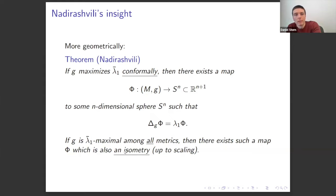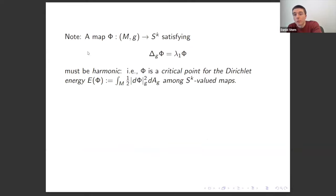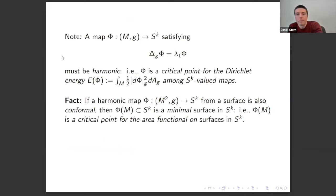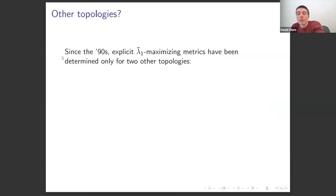To solve Berger's conjecture, one argues that a maximizing metric exists and relies on the Montiel-Ros classification of minimal immersions from the torus to spheres by first eigenfunctions. A map by first eigenfunctions is necessarily harmonic, and if a harmonic map from a surface to a sphere is also conformal, then its image is a minimal surface in the sphere. So any extremal metric for the first eigenvalue has to be induced by some minimal immersion into some sphere by first eigenfunctions.